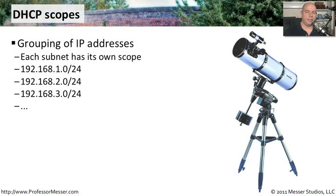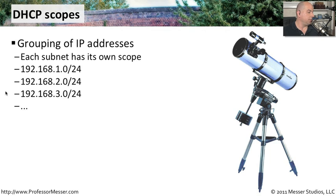If you're configuring your DHCP server, you may be asked to create a DHCP scope. A scope is effectively a grouping of IP addresses for a particular section of your network, and each subnet tends to have its own scope. So if you have 10 subnets, you generally also have 10 scopes. For example, you might have a scope for 192.168.1.0, 192.168.2.0, and the 192.168.3.0 subnets.